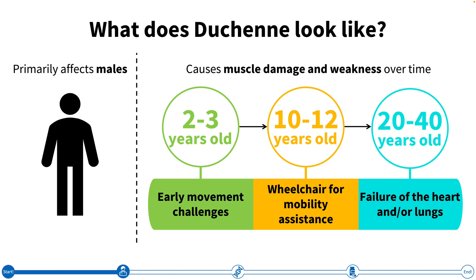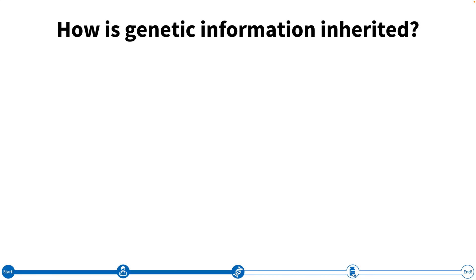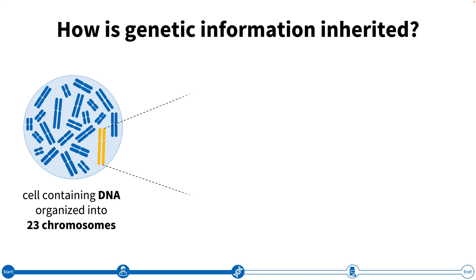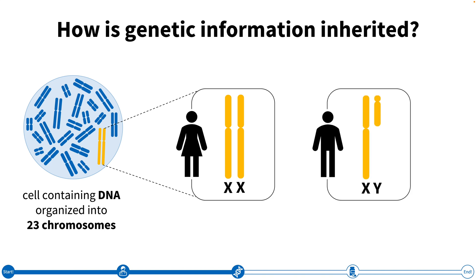Before we dive into how genetic changes lead to these symptoms, why does Duchenne primarily affect males? To answer this question, we need to go all the way back to the basic concept of inheritance. Our bodies are made up of trillions of cells, each containing deoxyribonucleic acid, or DNA, organized into 23 pairs of chromosomes. 22 of these chromosomes are considered autosomal, while the final pair are the sex chromosomes, which determine whether an individual is assigned male or female at birth. While female individuals have two X chromosomes, male individuals have one X and one Y chromosome.